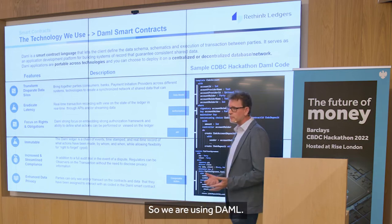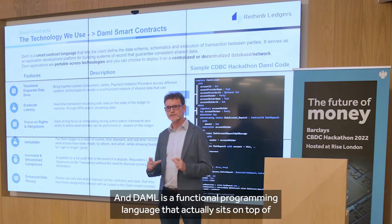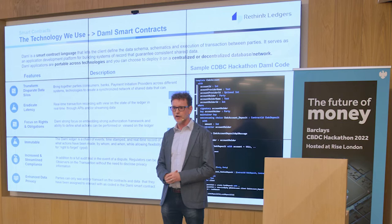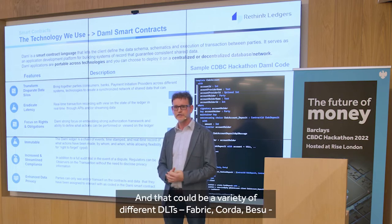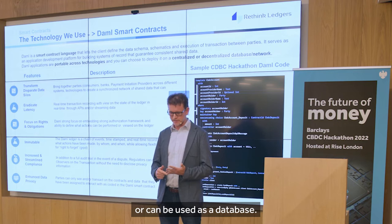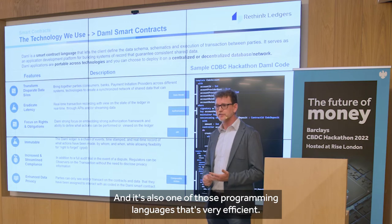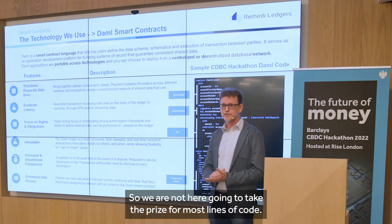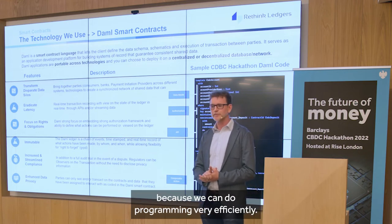We're using DAML. Most people probably don't know what DAML is — it's a functional programming language that actually sits on top of a ledger stack. That could be a variety of different DLTs: Fabric, Corda, Besu, or it can even be used as a database. It's also one of those programming languages that's very efficient, so we're not going to take the prize for the most lines of code — we're actually very confident we win the prize for the fewest lines of code.